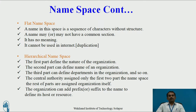If the user wants to find a proper structure, they can go to the hierarchical namespace. In the hierarchical namespace, the first part defines the nature of the organization, the second part defines the name of the organization, and the third part defines departments in the organization, and so on. The central authority assigns only the first two parts of the namespace; the rest of the parts are assigned by the organization itself. The organization can add a prefix or suffix to the name to define its hosts or resources.